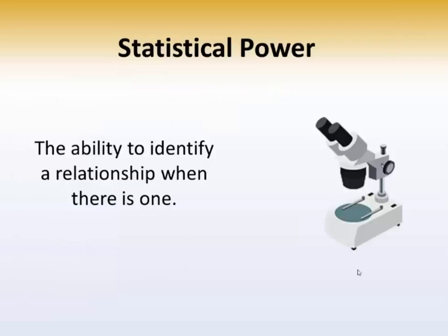Statistical power is the ability to identify a relationship when there actually is one. You conduct a study because you think there's a relationship. Once you conduct that study, you want to make sure you have sufficient power to identify a relationship if one actually exists.